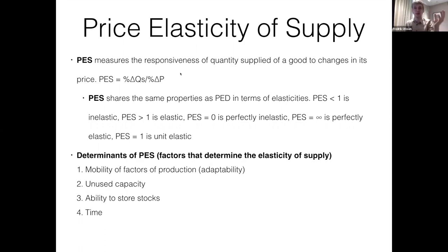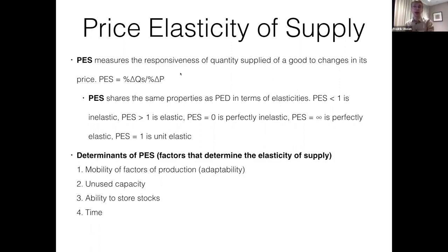That's essentially price elasticity of supply summarized — a lot of the concepts are transferable from PED. We didn't go through the mathematics of PES here because the maths is exactly the same as in PED, so go back to that second PED video if you're struggling. The key things are: knowing the definition of PES and recalling it, and knowing the four determinants so that given any good — like tomatoes — you can say with confidence whether supply will be inelastic or elastic. In the next video we'll talk about YED and XED, so tune back for those.